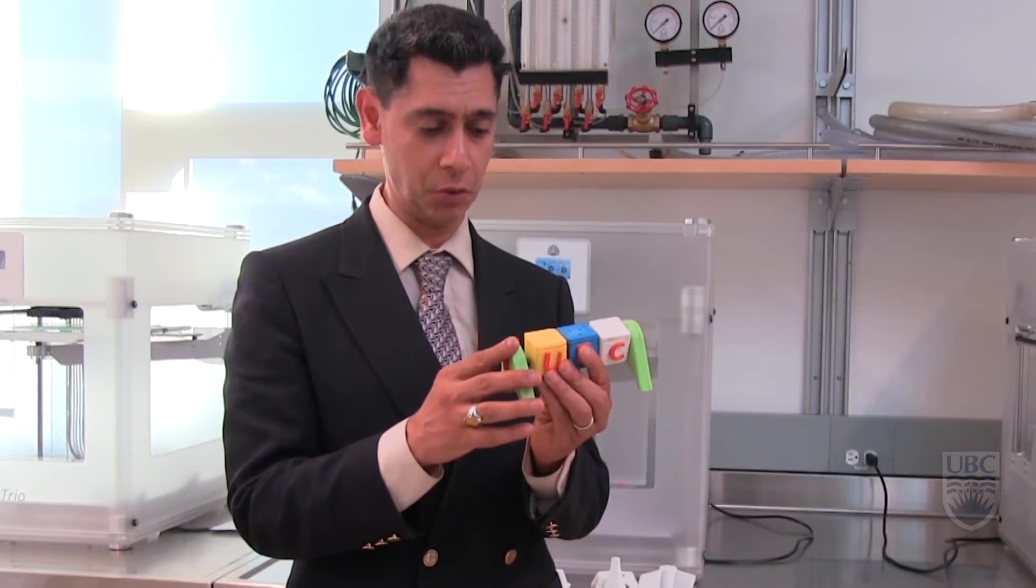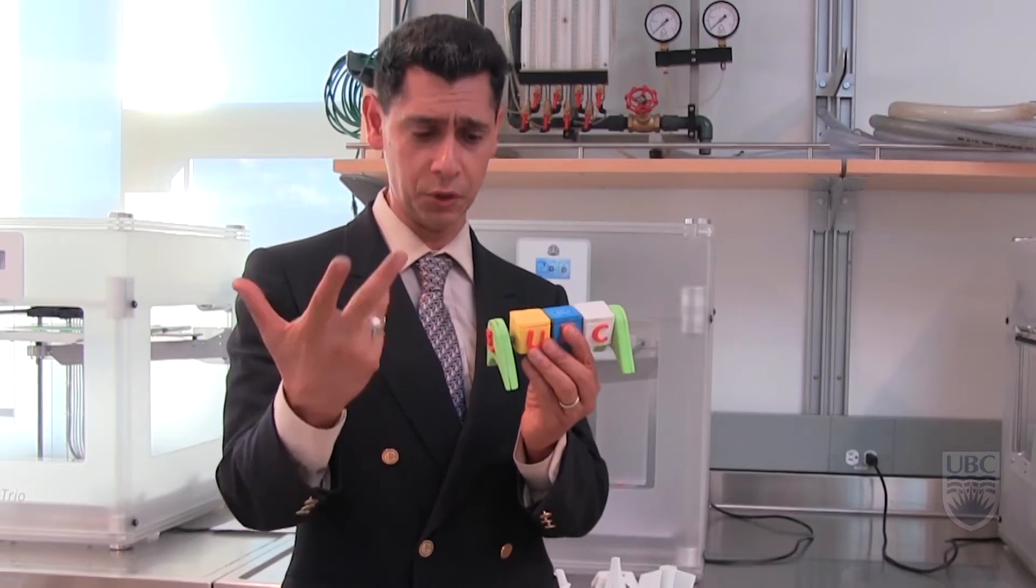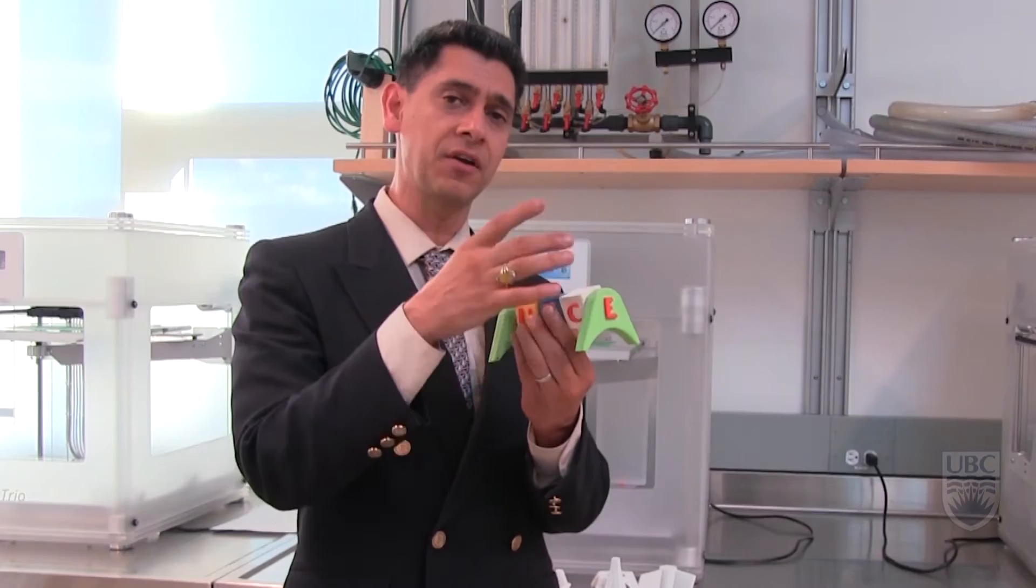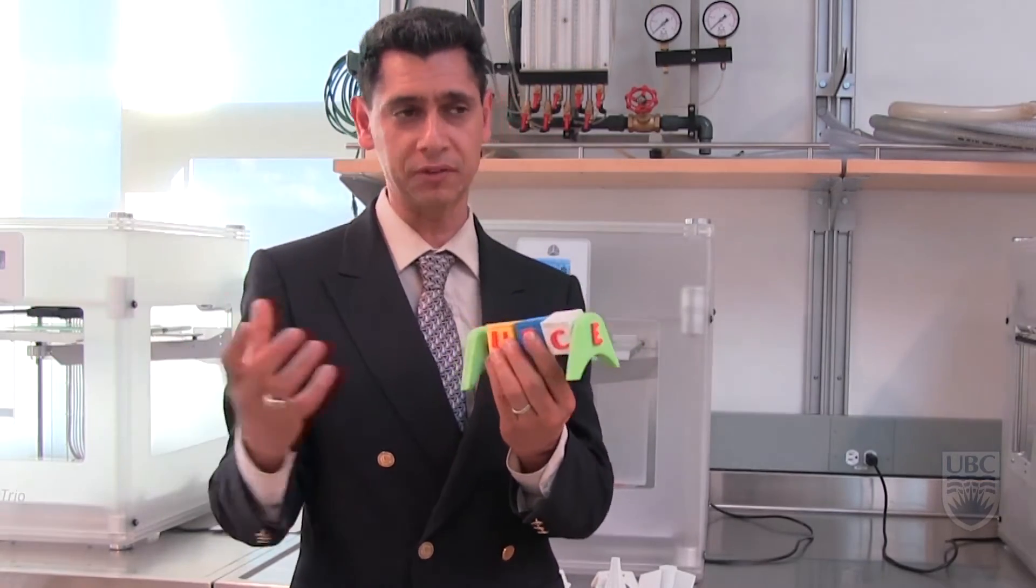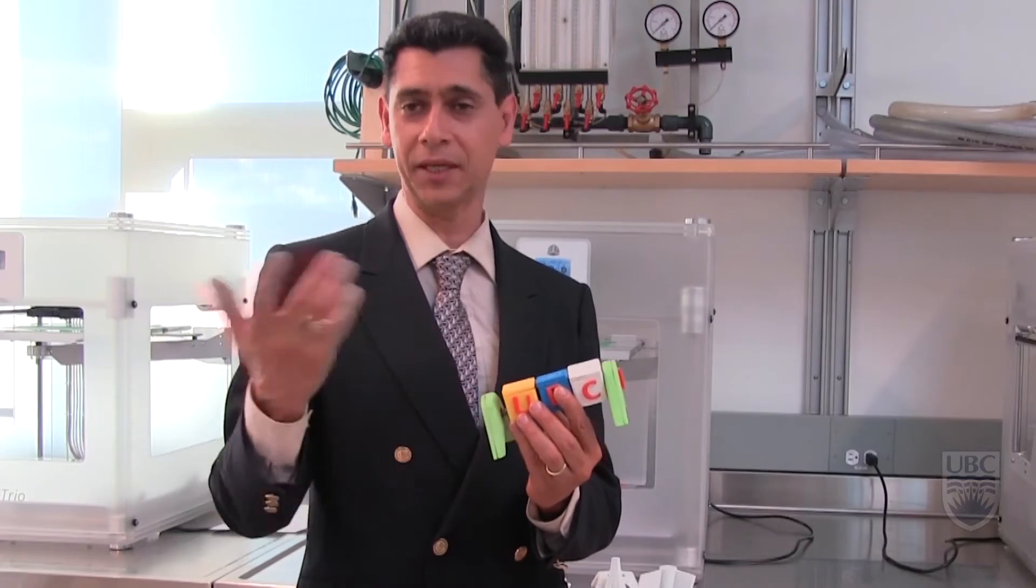They start to do modeling in a software called SolidWorks. That's the standard practice in engineering world software. It's a drawing, modeling, and simulation all in one package. And then, of course, they make a binary file out of it and transfer it to another software which is coming with these units, and then they can print it.